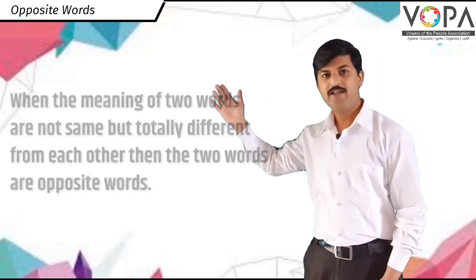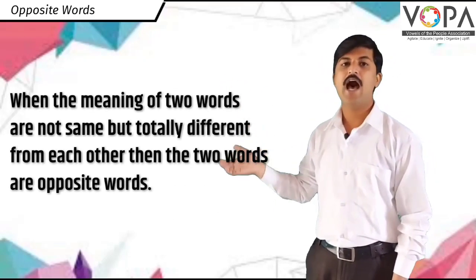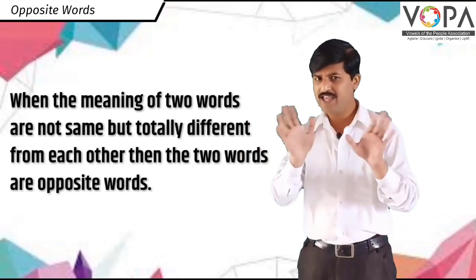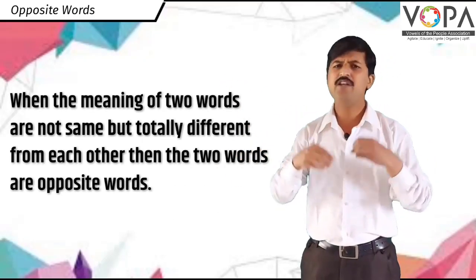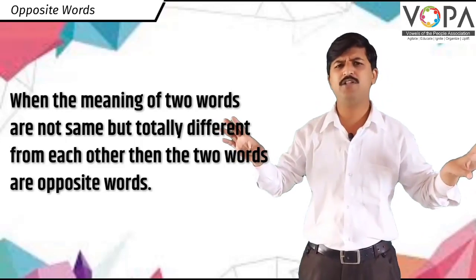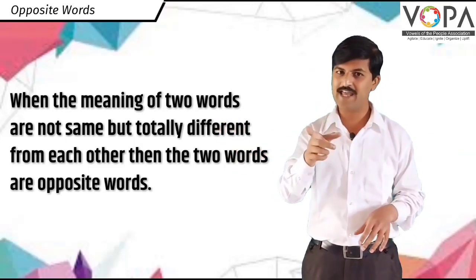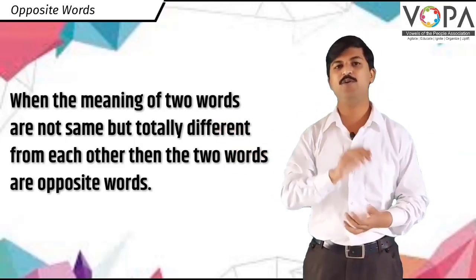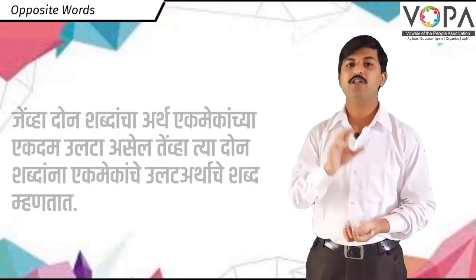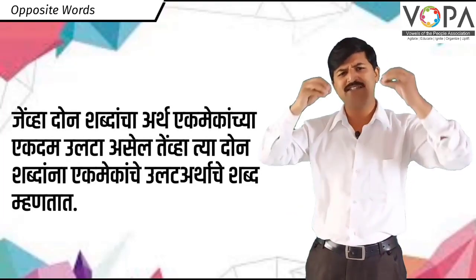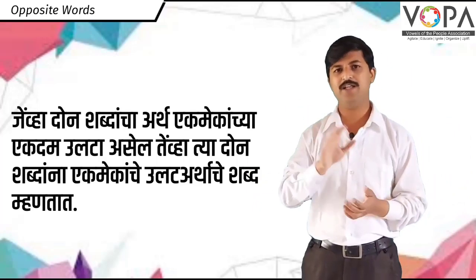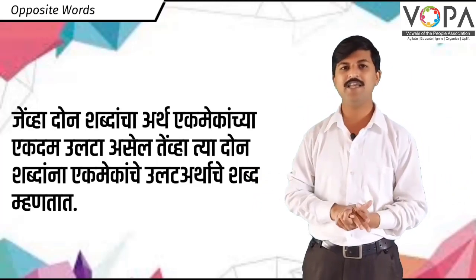When the meaning of two words are not the same but totally different from each other, then the two words are opposite words. Jewa dun shabdaan cha artha ek mekha cha ek dam ulta asil, tewa tya dun shabdaan na ek mekha cha ulat artha cha shabda manthad.